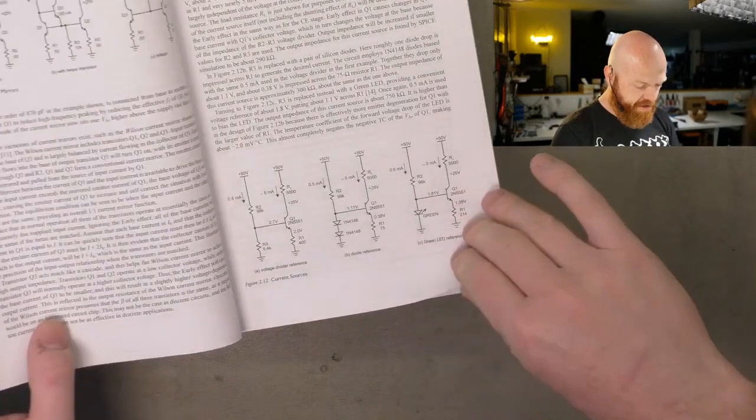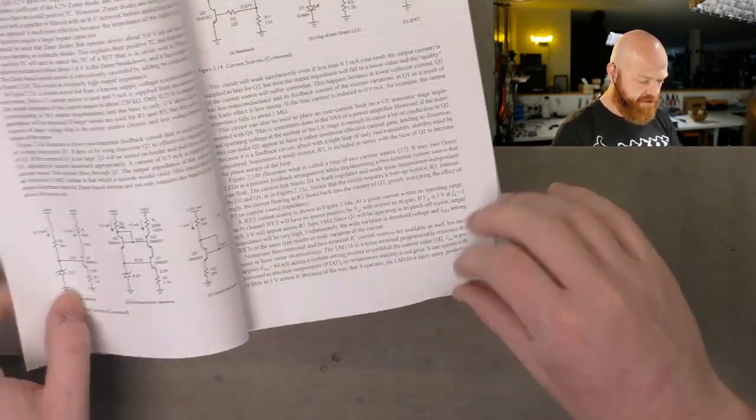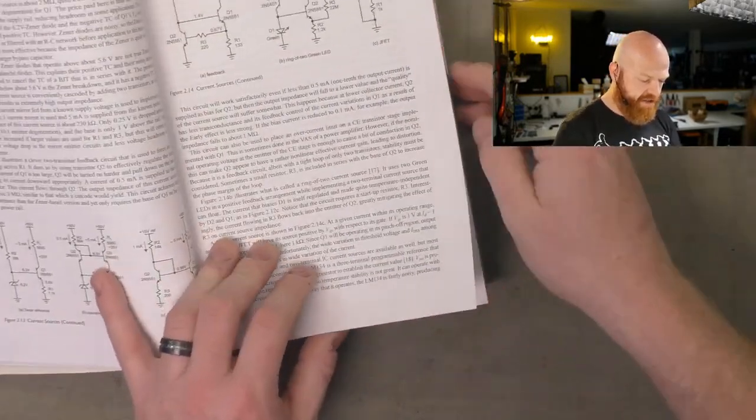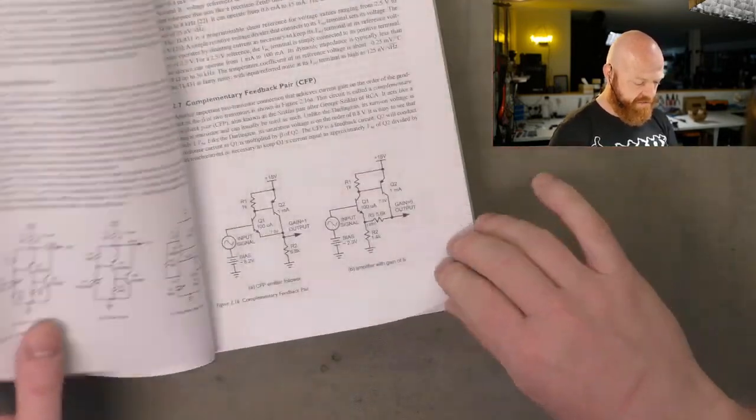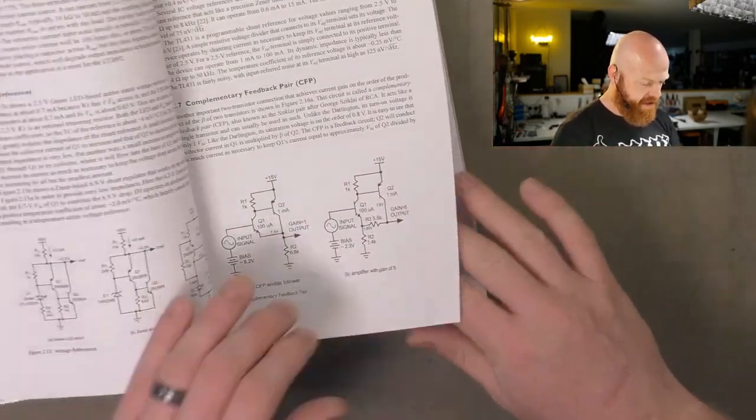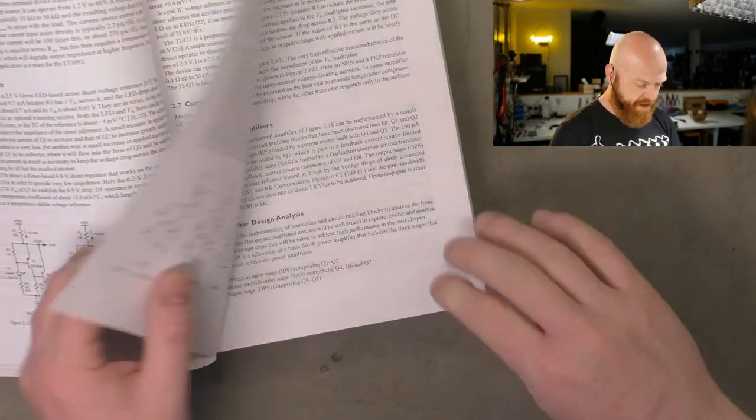Goes through a common emitter stage, just the basic gain stages, differential amplifier. That's what you see at the input of almost all solid state amps. Emitter follower, push pull ones anyway. Cascodes, current mirrors, current sources, voltage references.